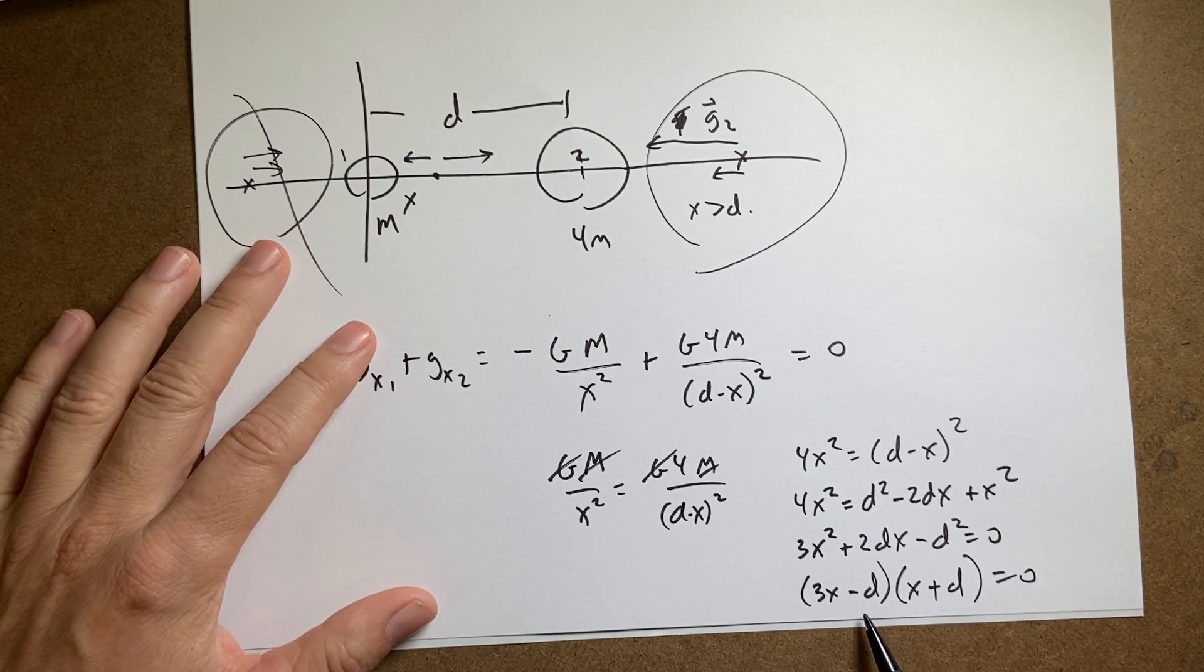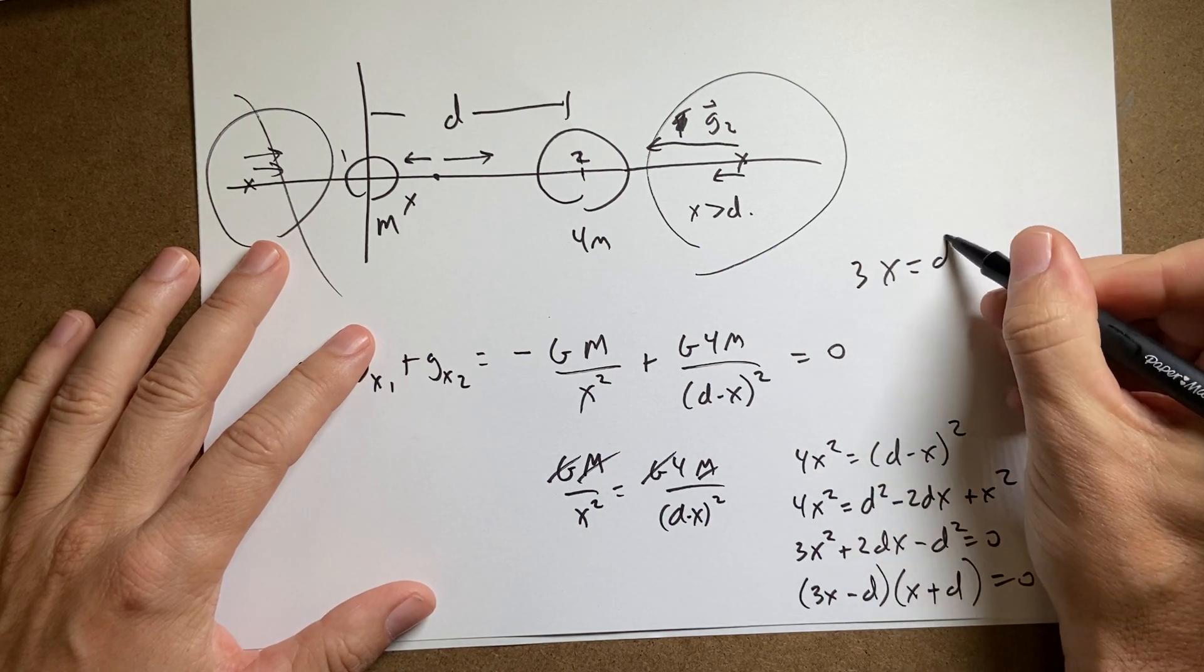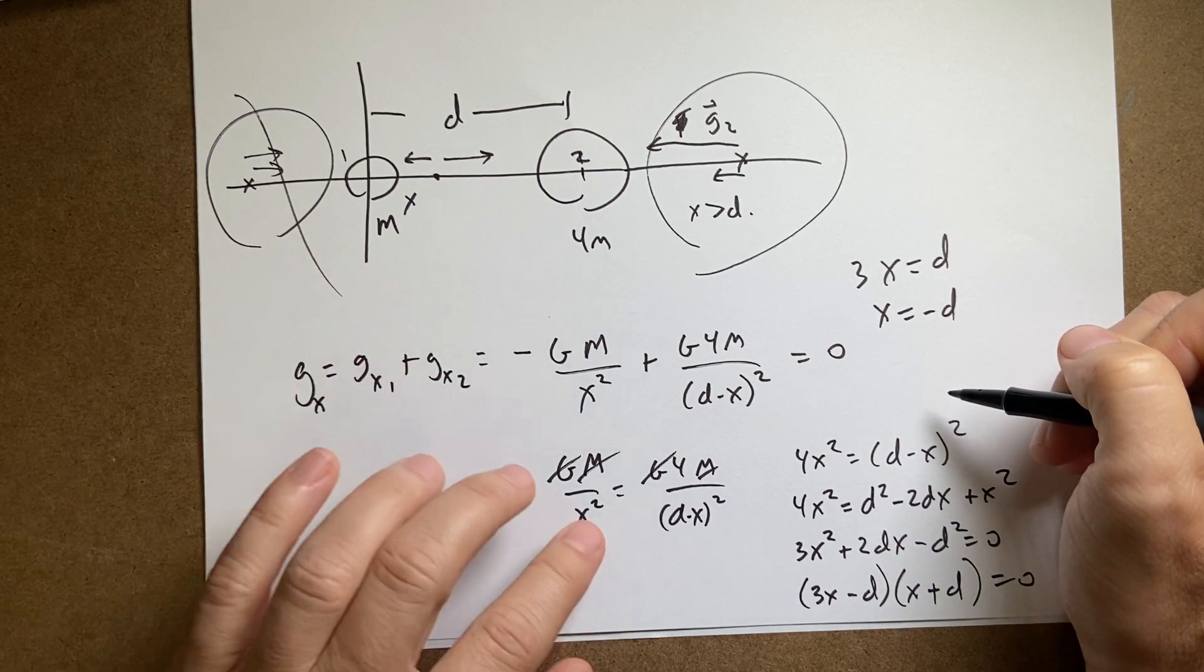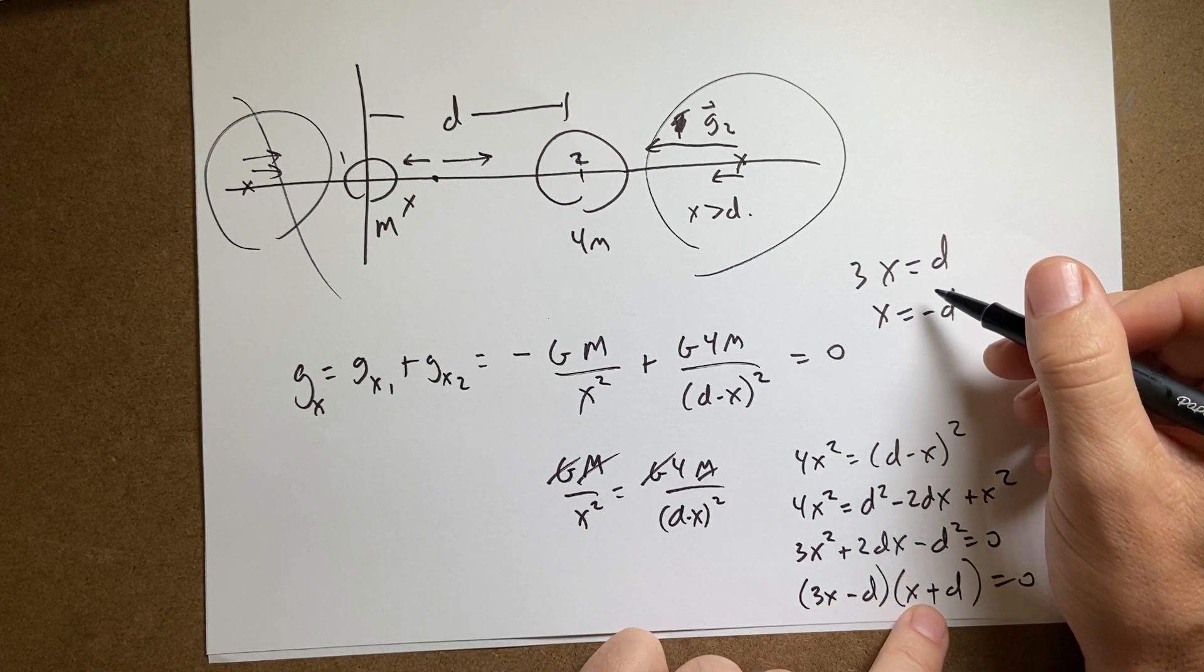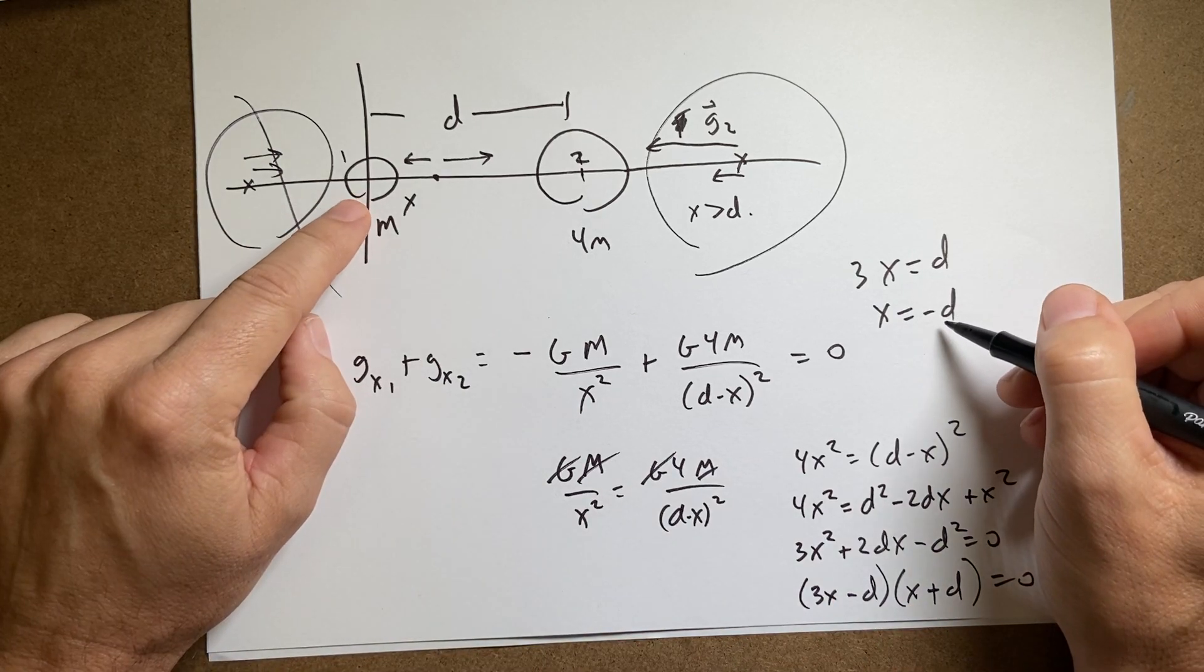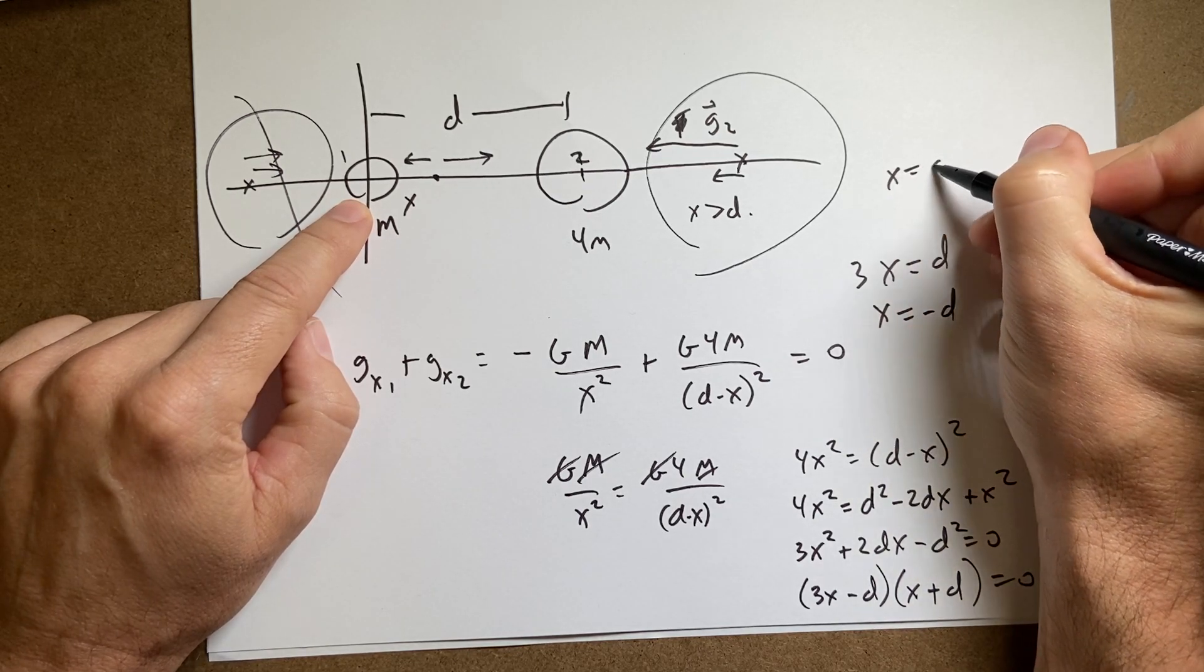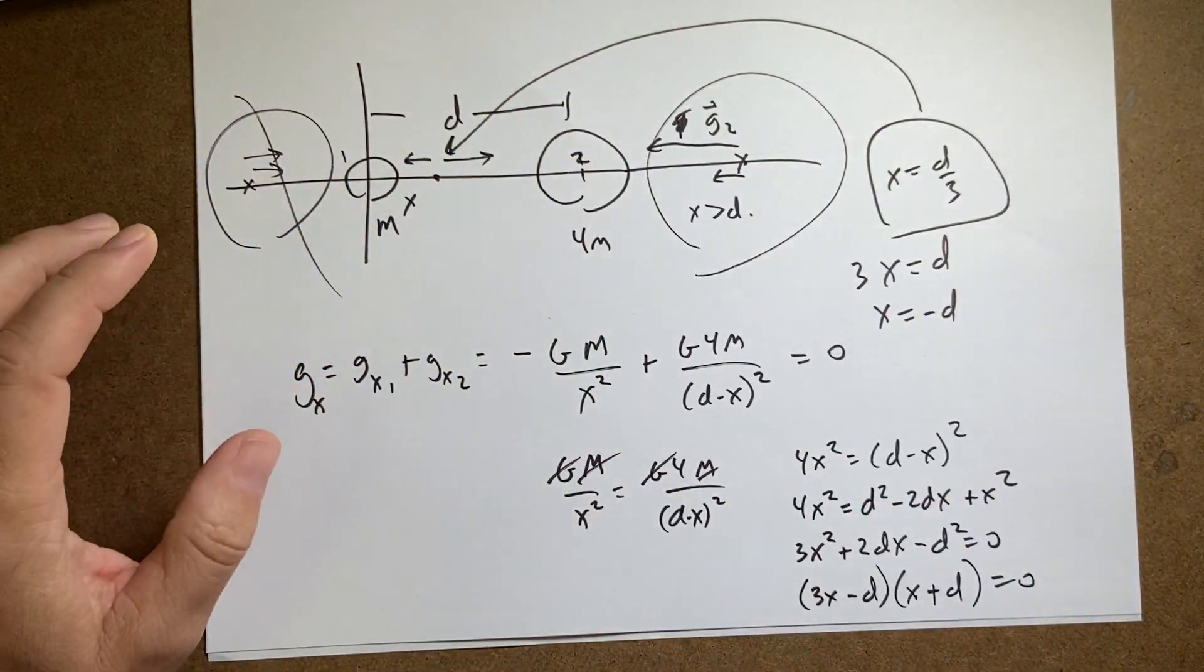So if this is the case, then either x equals 3x equals d or x equals negative d. Okay. So x equals negative d, that doesn't work because that's not in my range. But this one is. So x equals d over three.